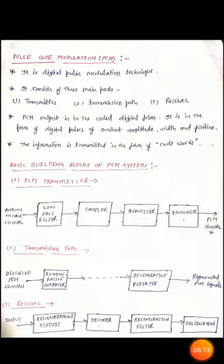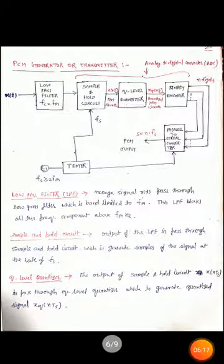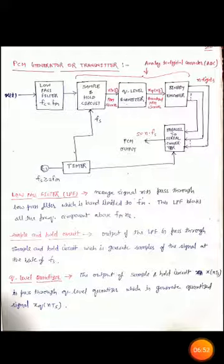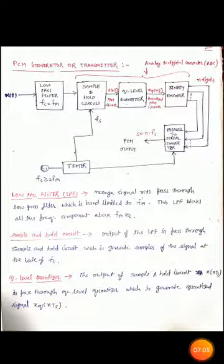Now in detail, we discuss the PCM transmitter. In the PCM transmitter block diagram, x(t) is the continuous time message signal. First, this message signal passes through a low pass filter with cutoff frequency F_c equal to F_m, where F_m is the maximum frequency present in the signal. All frequency components below this cutoff frequency pass through the filter, while all components above it are blocked. The output of this low pass filter is the message signal with highest frequency F_m.